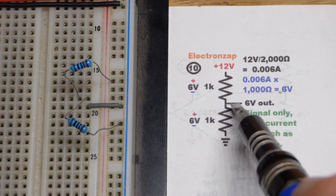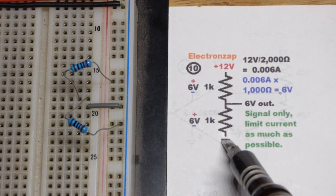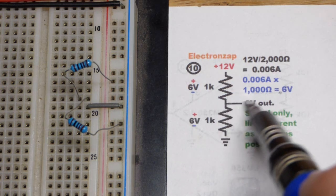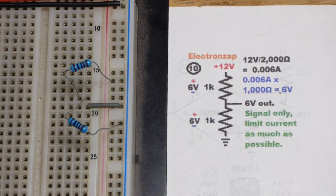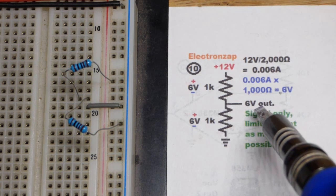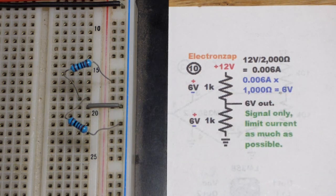This point is considered 0 volts. We got 6 volts across it, so that's considered 6 volts in relationship to ground. Hopefully that makes sense. But again, that's not to power a load. We're going to add a load there to show how easy it is to throw it off.